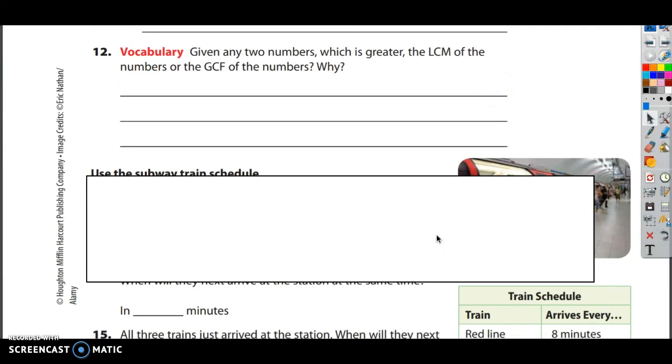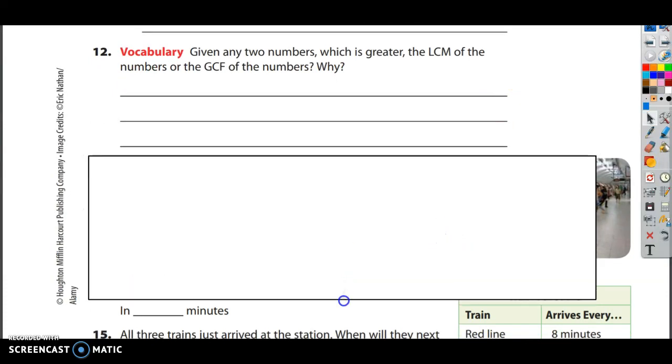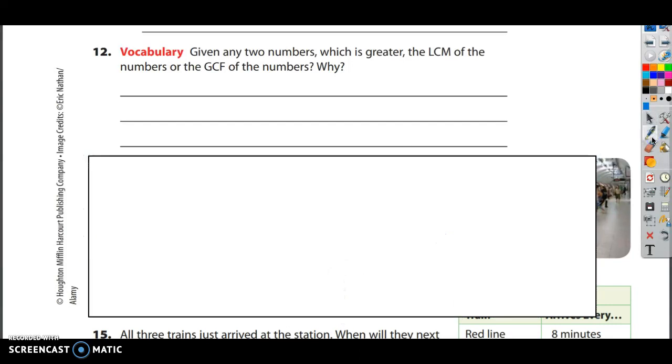12 reads, given any two numbers which is greater, the LCM of the numbers or the GCF of the numbers? A lot of kids want to put GCF here, and while that could be the answer, they're choosing the wrong reason for that answer. L stands for least, and G stands for greatest, and so you're thinking to yourself, well, greatest is more than least, and that's true, obviously, but let's think this through. I think the best way to answer 12 is to give an example. So let's go ahead and figure out two things. Let's figure out the LCM of two numbers, and I'm going to choose easy numbers. I'm going to do 6 and 9. And let's do the GCF of 6 and 9.